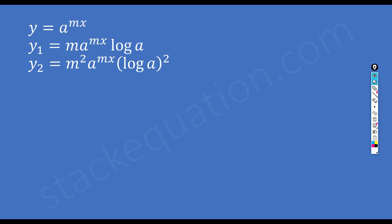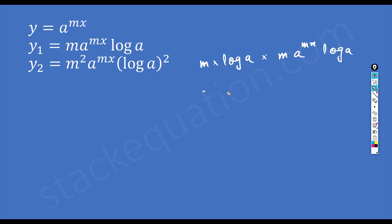If I double differentiate it, since log a and m are constants we leave them, and we just differentiate a to the power mx, which gives m into a to the power mx into log a. Merging everything, the second derivative is m squared into a to the power mx into log a squared.